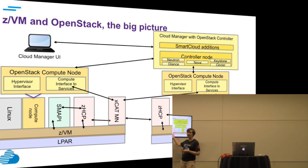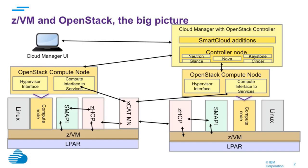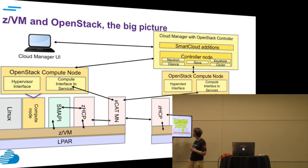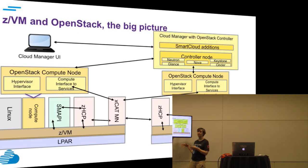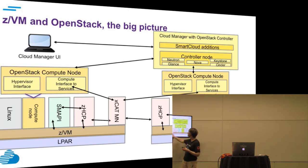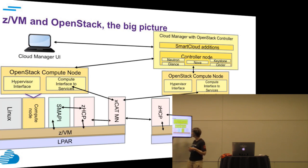A couple years ago we did some XCAT support. XCAT is the extreme cloud administration toolkit and it has two parts: a management node, which you only need one of, and a hardware control point that you have on each system. The management node and hardware control points talk over SSH — a nice secure connection.